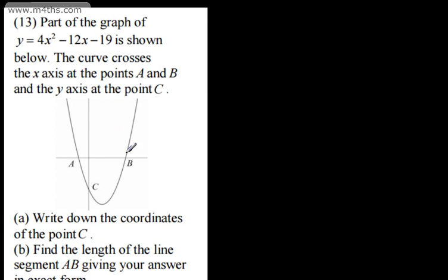Here's A, here's B, and here's C. In part A, we're asked to write down the coordinates of the point C. So this is the point C, it crosses the y-axis, so x will be equal to 0. If we look at C, x will be 0, so this will be 0 plus 0 minus the 19, so we can say that will be negative 19.